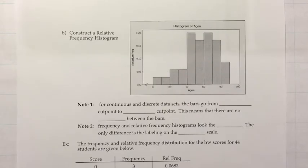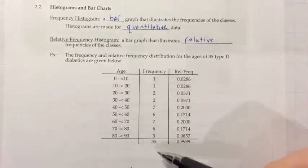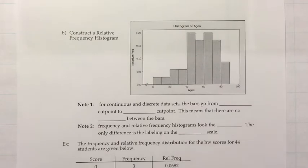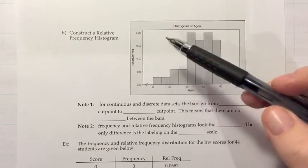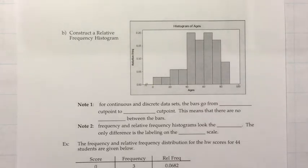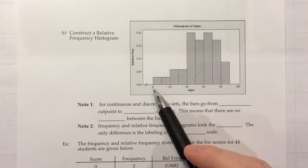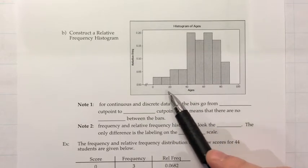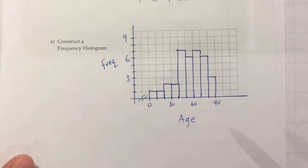Continuing with the same problem, they now want us to construct a relative frequency histogram. We start over, but use the relative frequencies for the bar heights instead. The example here has already been done — notice it uses a nice numbering of 5, 10, 15, 20 for the vertical, the tallest bar goes more than halfway up, and the horizontal uses the same choice of moving the zero over. The numbering of every other or every third tick mark is just a personal choice.